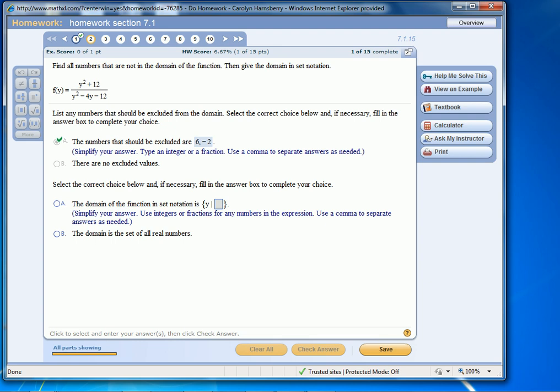Now we're told to write the domain of the function in set notation. What you do, you start off with the variable Y and then you click on cannot equal 6 comma negative 2.